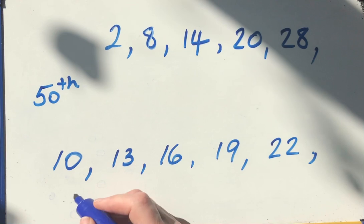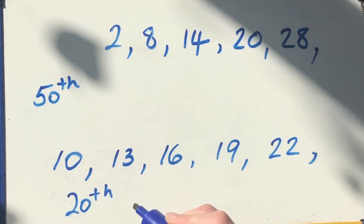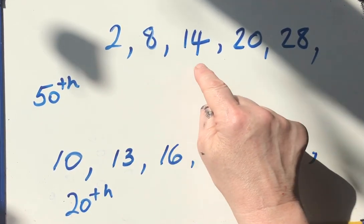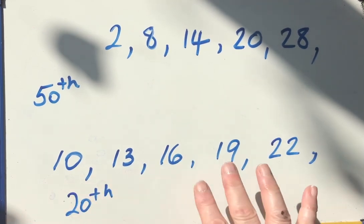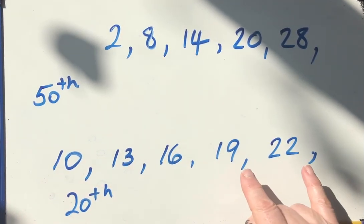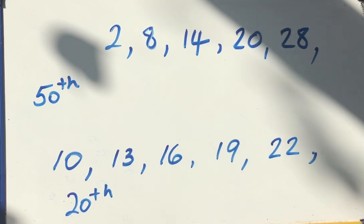So have a go finding the nth term and then let's say the 50th term for this one and the 20th term for this one. That means if I wrote out that sequence, what would be the 50th number that's the first, the second number, the third number, the fourth number? What would be the 50th number I write down? And in here I've only written down five terms, what would the 20th number be? Okay, pause the video and have a go.